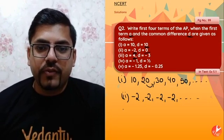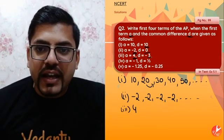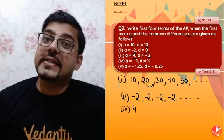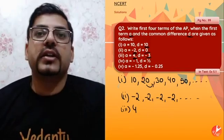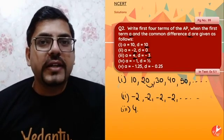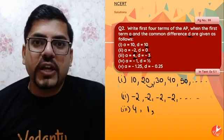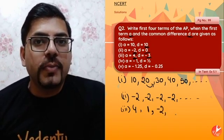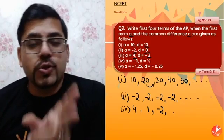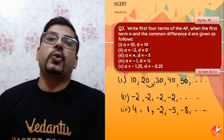Ab third wala dekhte hain. Yahan first term hai 4. Iske baad every time we have to do minus 3, because D = -3 hai. Toh 4 minus 3 = 1, then 1 minus 3 = minus 2, then minus 2 minus 3 = minus 5, then minus 5 minus 3 = minus 8, and so on. So the AP is: 4, 1, -2, -5, -8...